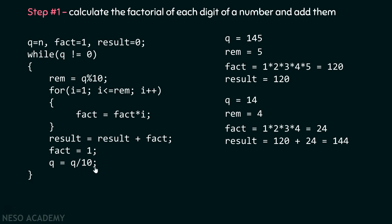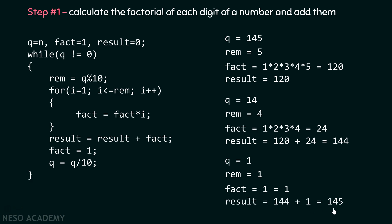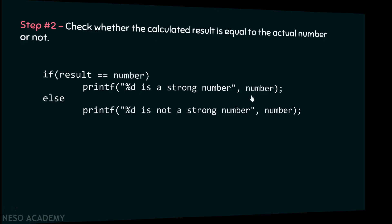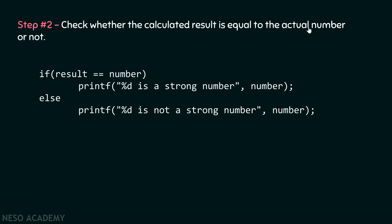Since q = 1 ≠ 0, we repeat. rem = 1 mod 10 = 1, so the for loop runs once: fact = 1. Result becomes 144 + 1 = 145. Then q = 1 ÷ 10 = 0. The while loop exits. Since result (145) equals the original number (145), the output is: 145 is a strong number.